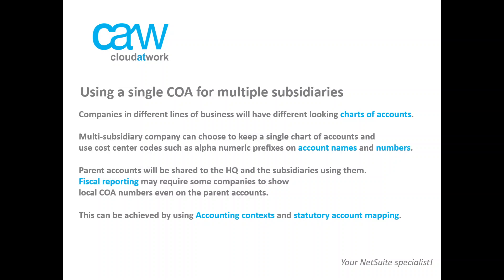Now, how do we actually use a single chart of accounts for multiple subsidiaries? Companies in different lines of business will have different looking charts of accounts. Multi-subsidiary companies can choose to keep a single chart of accounts and use cost center codes such as alphanumeric prefixes on account names and numbers. Parent accounts will be shared to the HQ and the subsidiaries using them. Fiscal reporting may require some companies to show local chart of account numbers even on the parent accounts. This may be achieved using accounting context and statutory account mapping.